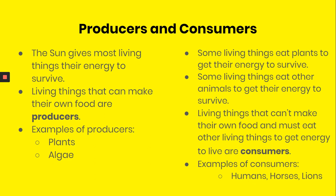Some living things eat plants to get their energy to survive, and some living things eat other animals to get their energy to survive. Living things that can't make their own food and must eat other living things to get energy to live are consumers. Examples of consumers include human beings, horses, and lions.